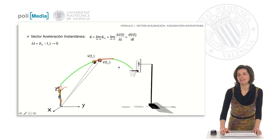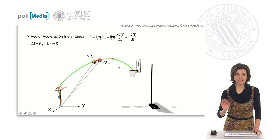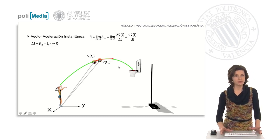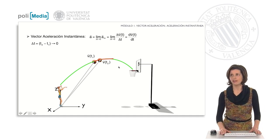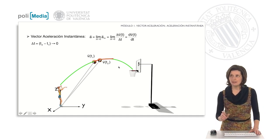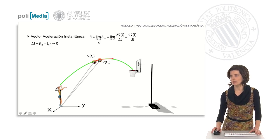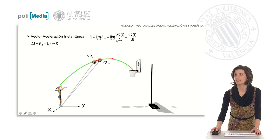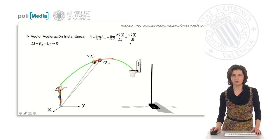If the change in velocity is evaluated at a given instant t, we speak of an instantaneous acceleration vector. The concept is similar to that of mean acceleration, but the time interval is infinitely small. Therefore, it is the limit when the time increment tends to zero of the average acceleration vector, and this is the derivative of the instantaneous velocity vector with respect to time.